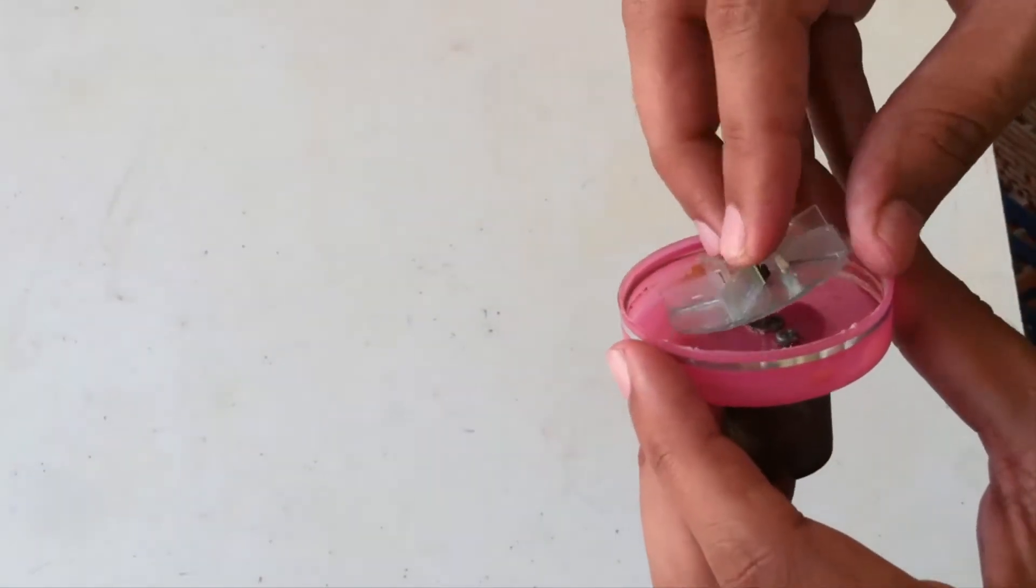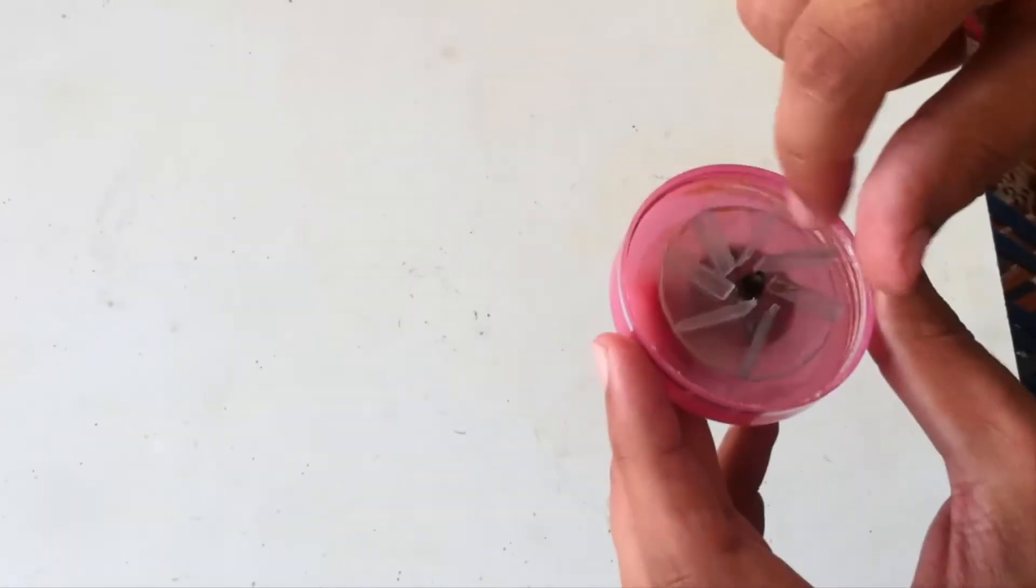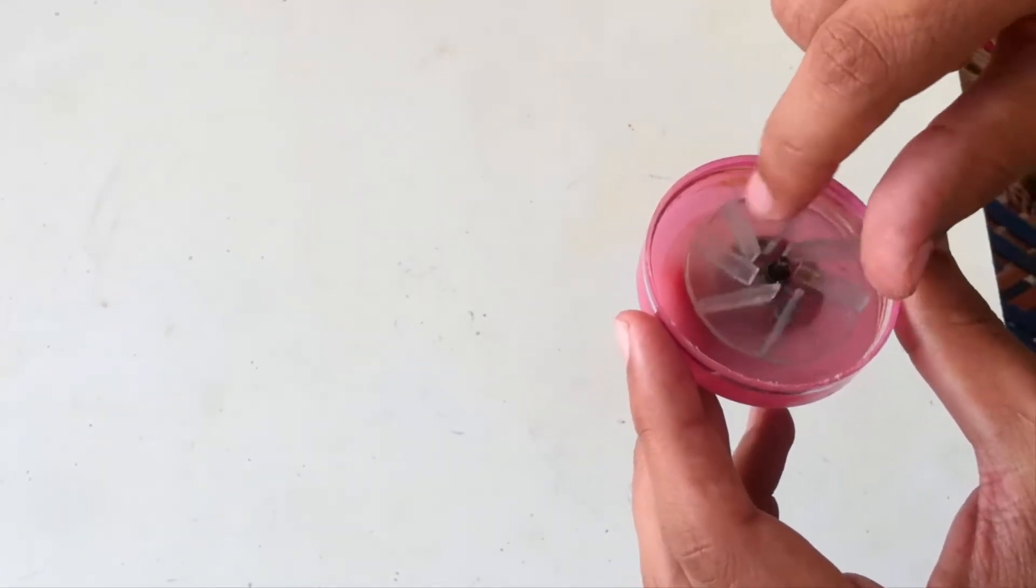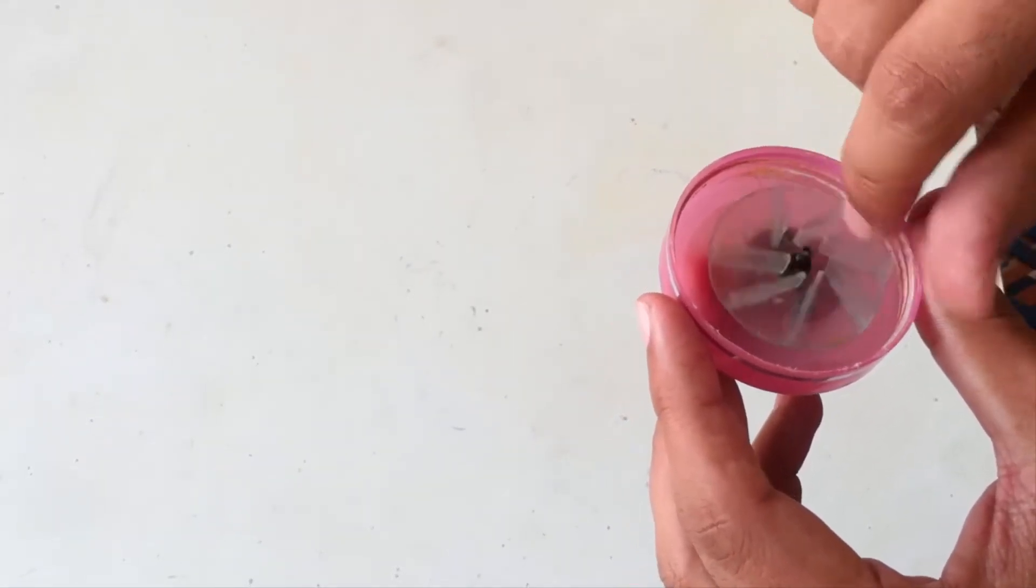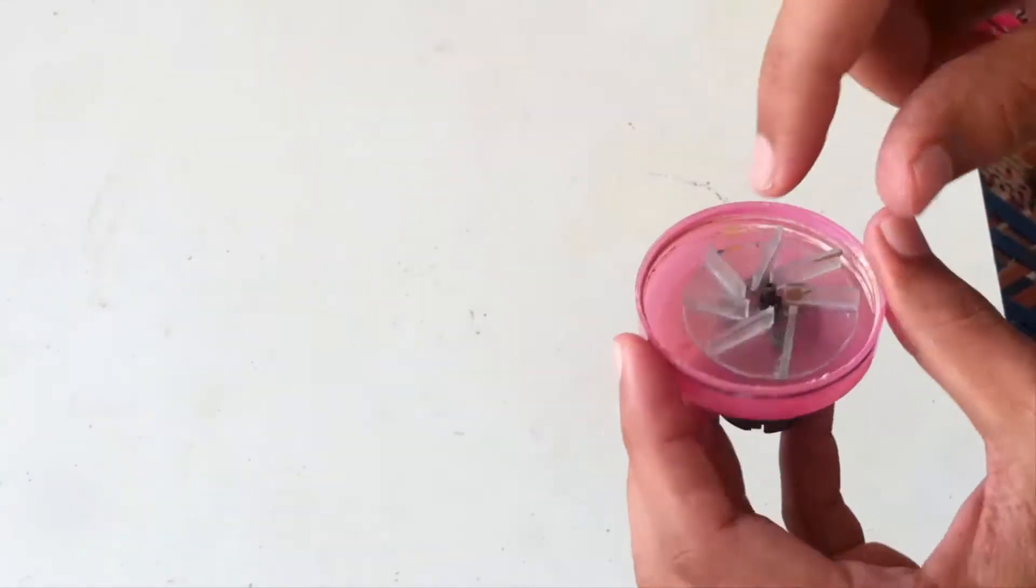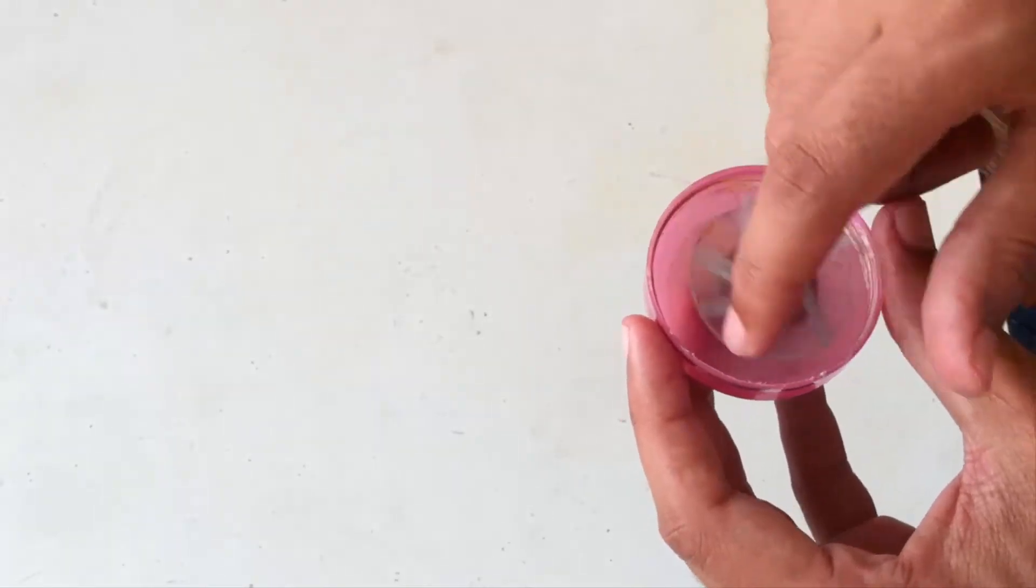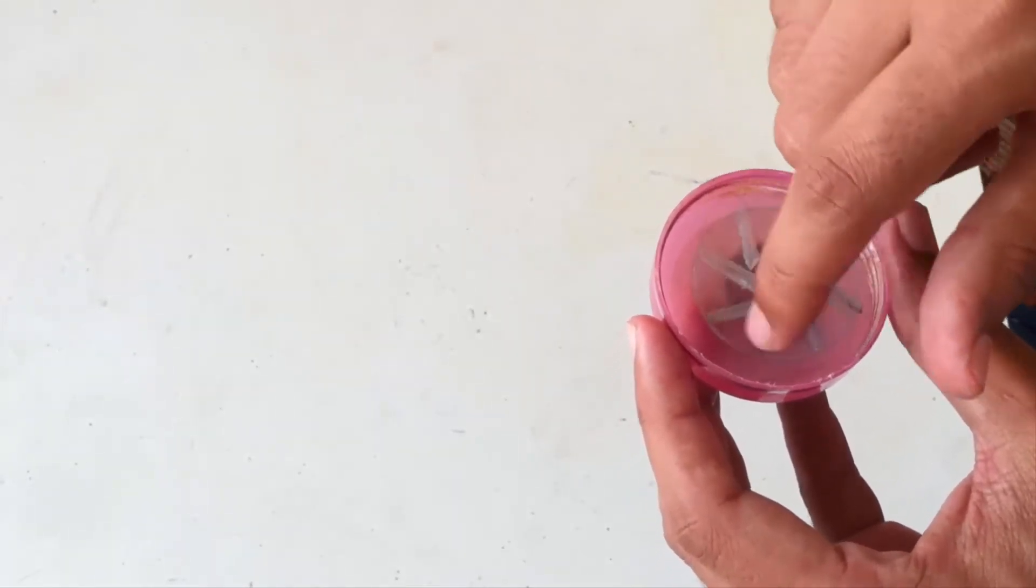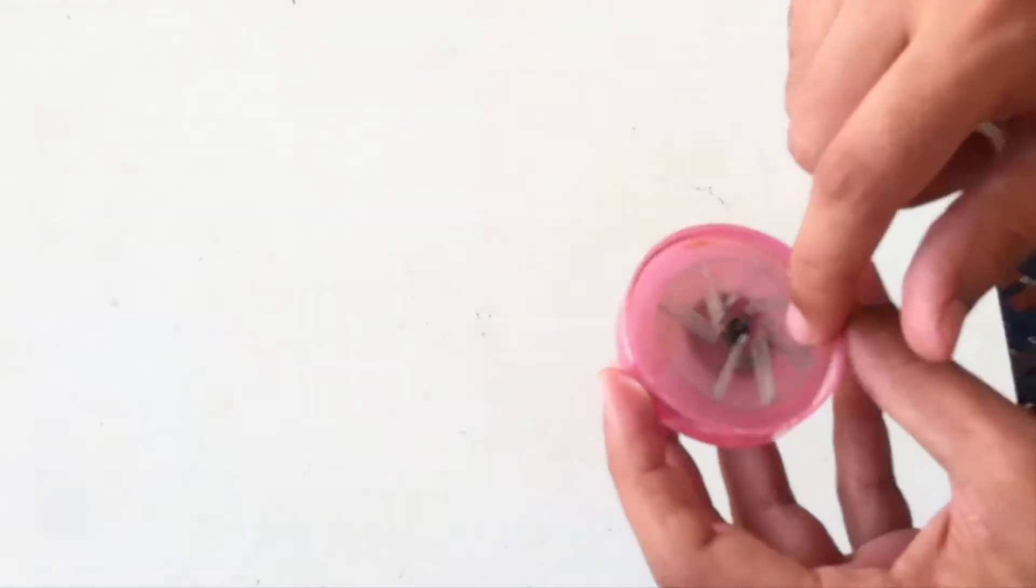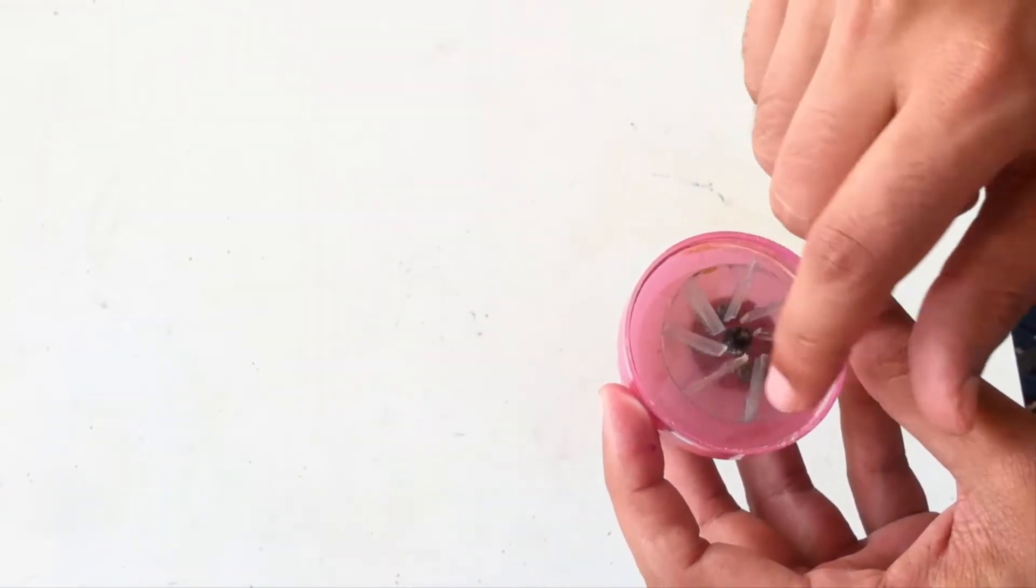We are going to place this fan in this lid on the axle of the DC motor. Just make sure there is no slip between the axle and the fan that we are using. If there is some kind of slip you can use some stuff to make it tighten.